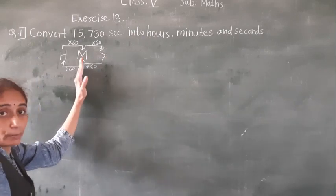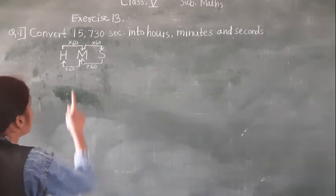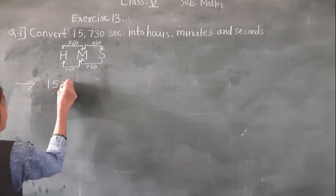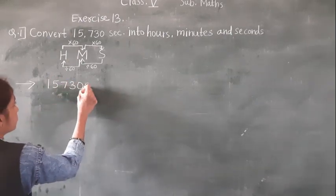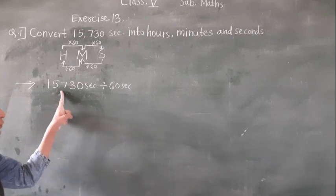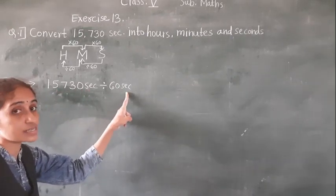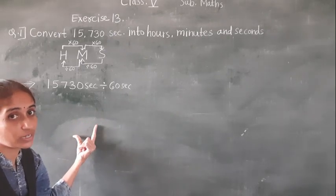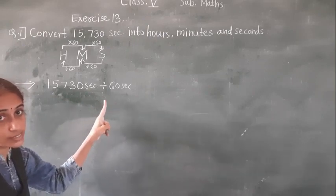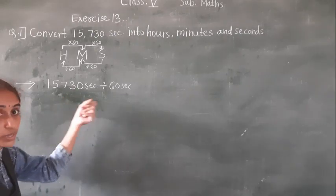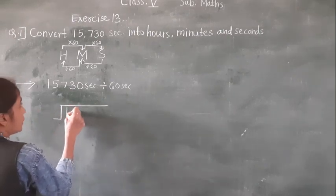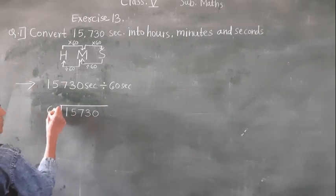First, we will convert seconds into minutes. How many seconds are given? 15,730 seconds. For these seconds we will divide by 60. Because 1 minute is equal to 60 seconds. So we have to find the minutes — we divide by 60. So 15,730 divided by 60.